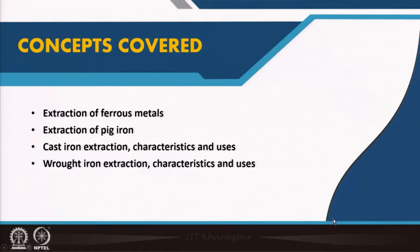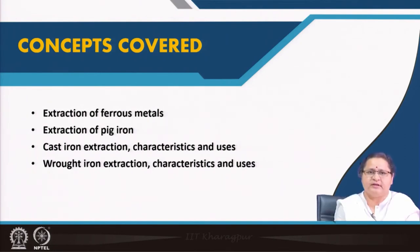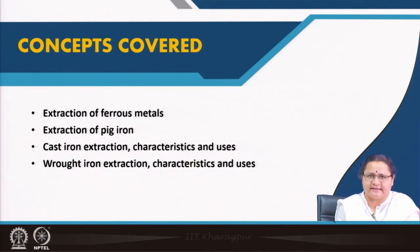We will move on to cast iron and wrought iron in this lecture, because these two represent very preliminary uses of iron. I had shown you examples of the Eiffel Tower, which is made of wrought iron, the inside of the Statue of Liberty made of wrought iron, and cast iron bridges were among the very initial iron structures. We will cover these two and then move on to steel, which is more used nowadays.